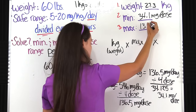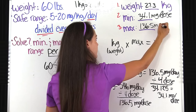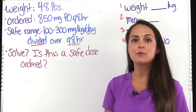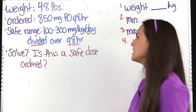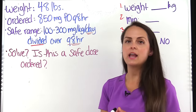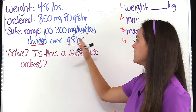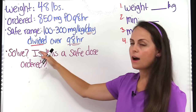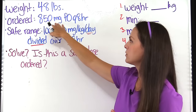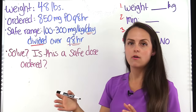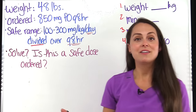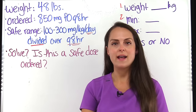We are done solving our first problem. The second problem says we have a child who weighs 48 pounds and the physician has ordered a medication at 850 milligrams by mouth every eight hours. This medication has a safe dose range of 100 to 300 milligrams per kilogram per day, divided every eight hours. We need to determine: is this a safe dose for this child based on their weight and this safe dose range? First, we convert the weight from pounds to kilograms.